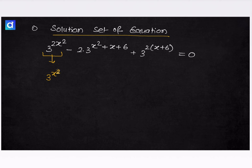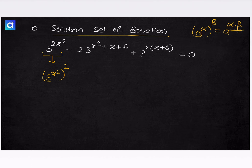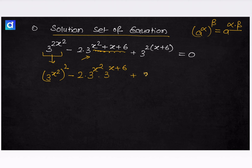We can write this as 3 to the power x squared, whole squared. Because we know that if we have a to the power alpha, whole power beta, we can write this as a to the power alpha into beta. So this becomes 3 to the power x squared plus x plus 6, and we can write the other term as 3 to the power x plus 6. So this whole expression squared is equal to 0.